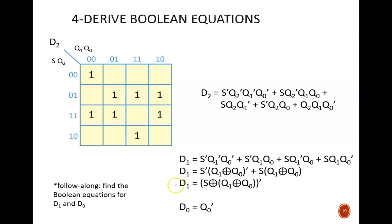D0 is the easy one. Hopefully you obtained the equation D0 equals Q0 prime. D1 is trickier. Taken straight from the K-map in SOP form, you should have obtained the four-term equation here. From there, you can factor out S prime from the first two terms. Inside the parentheses would be Q1 prime Q0 prime OR with Q1 Q0. That is the definition of exclusive NOR, as seen in the next line of the equation.